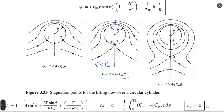When circulation is smaller than 4πV∞R, we have two stagnation points whose positions can be found analytically. When circulation is bigger than 4πV∞R, we also find two stagnation points analytically — one outside the cylinder in the flow field.